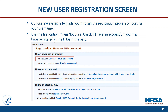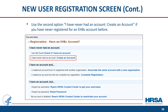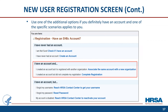When you click Create an Account, you will go to a screen where several options are available to guide you through the registration process or to help you locate your username if you have registered before. Use the first option, 'I am not sure, check if I have an account,' if you may have registered in the EHBs in the past. Use the second option, 'I have never had an account, create an account,' only if you are positive you have never had an account before. Most of you here will probably benefit from using the first option.